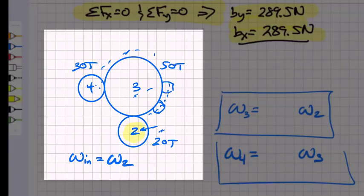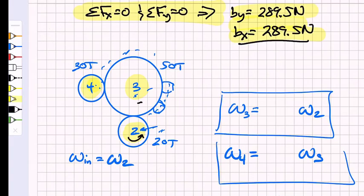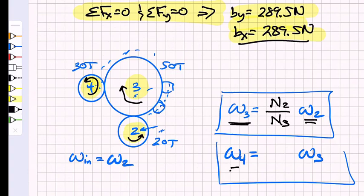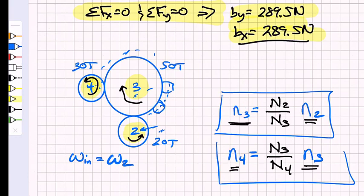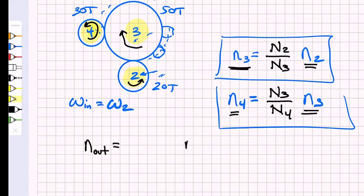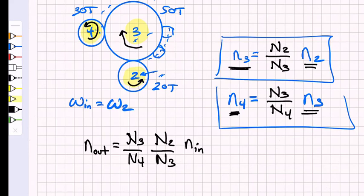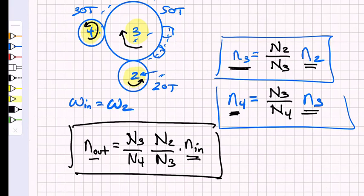Now considering the full two-stage gearbox: gear two is counterclockwise, gear three is clockwise, and gear four is counterclockwise. The angular velocity of gear three is the tooth ratio n2 over n3 times omega two, and omega four is n3 over n4 times omega three. Replacing angular velocities with rpms, we have the output speed n4 expressed as a function of the input speed through the combined tooth ratios.